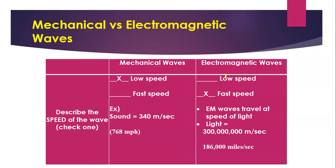How fast do electromagnetic waves travel? This is the second-to-last column of your data table. Mechanical waves like sound travel relatively slowly compared to electromagnetic waves. Electromagnetic waves can travel 300 million meters per second. Imagine that meter stick I always use in class — take 300 million of them and line them up tip to tip, then clear all 300 million of them in one second. That's how fast the speed of light is.